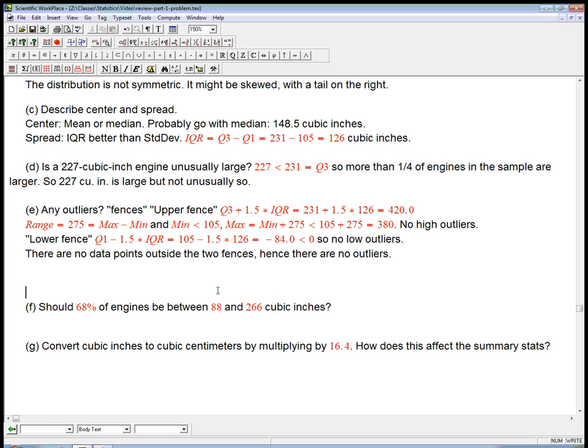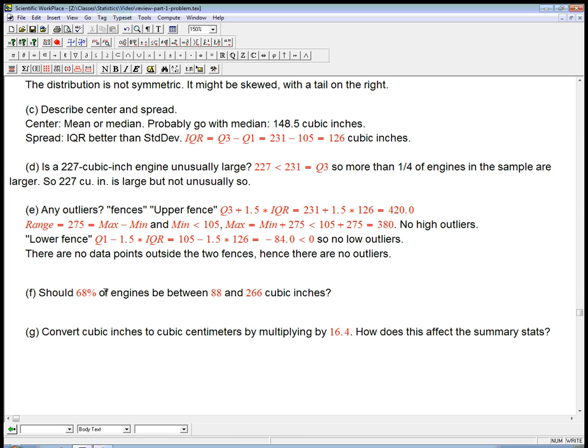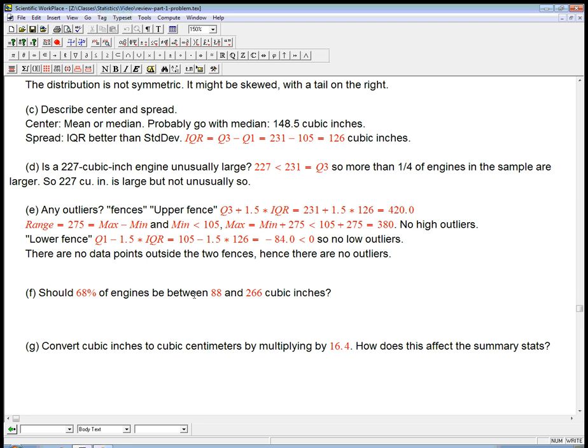Two more questions. Should 68% of engines be between 88 and 266 cubic inches? And in the book version of the problem, they give us a little hint as to what these numbers are. But this should be a very big hint. Why would somebody guess this magic number 68%? Well, that's the rule for normal distribution. So, if the normal model applied here with reasonable accuracy, then we could use the 68% rule to say what?